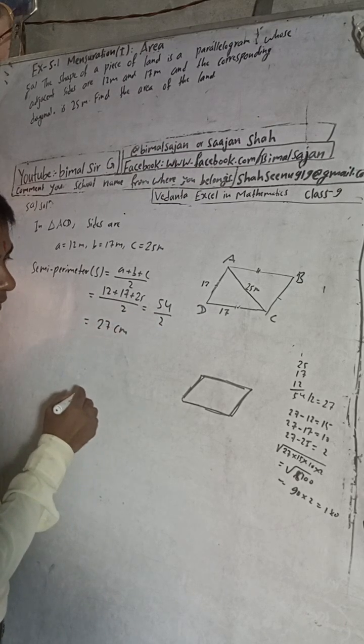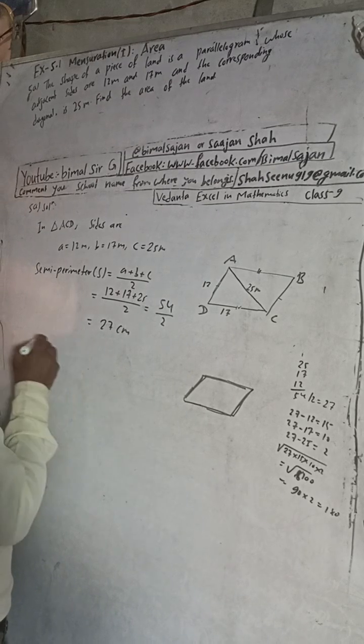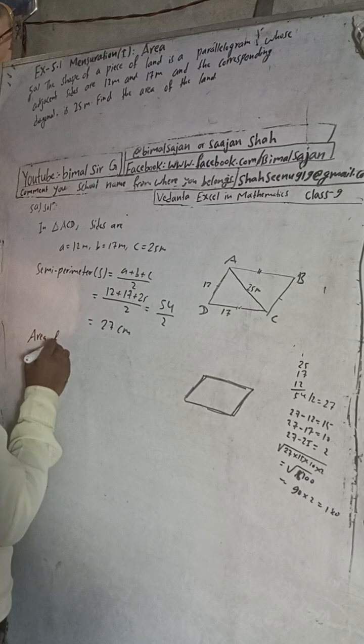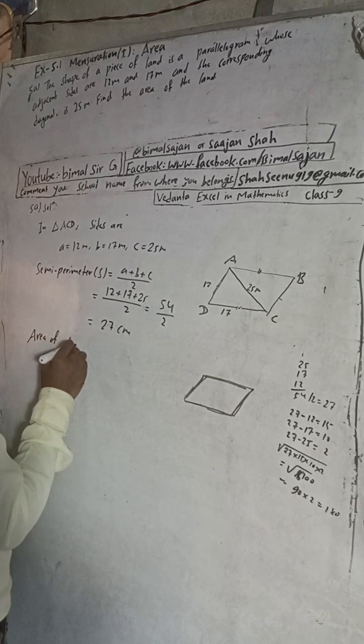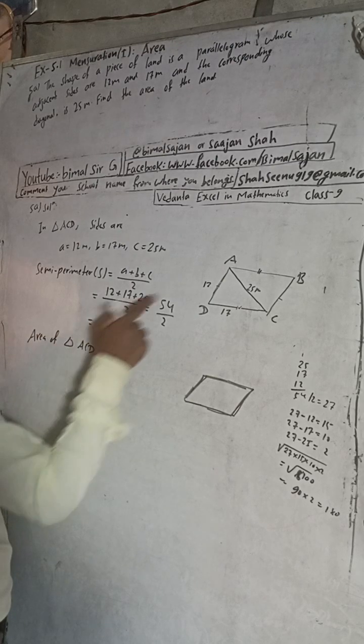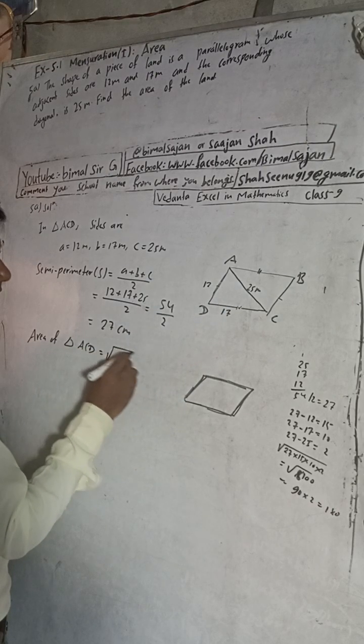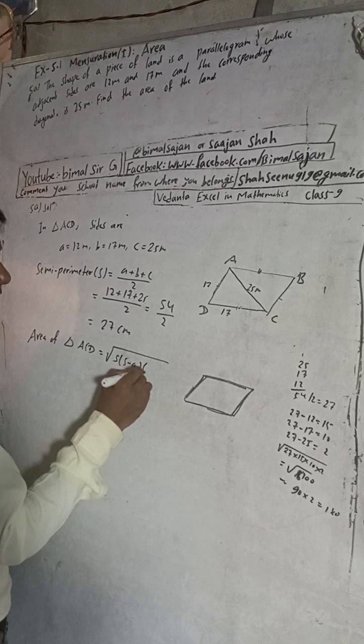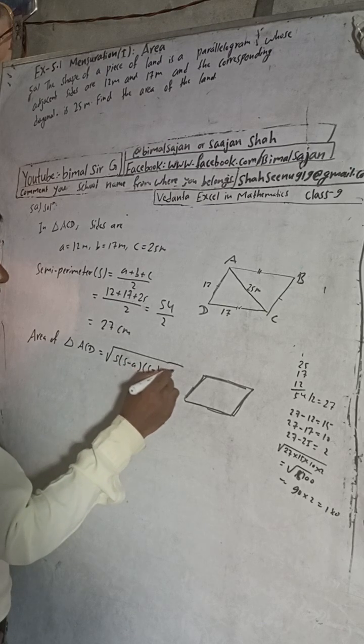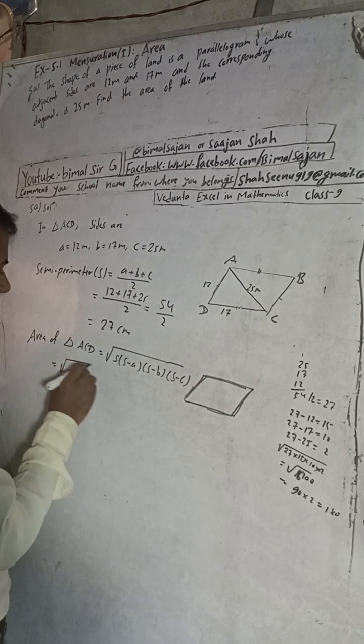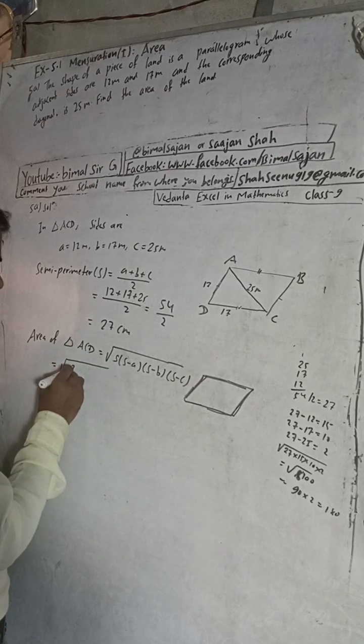Now area of triangle ACD. What formula is here? Root under S into S minus A into S minus B into S minus C. So S is 27.